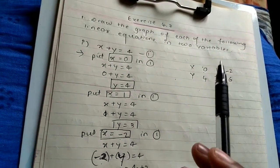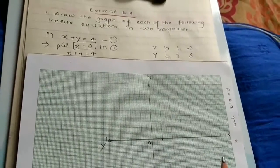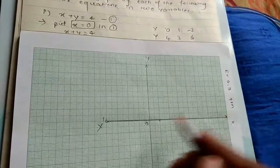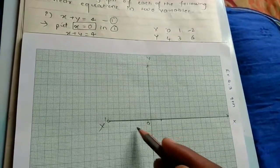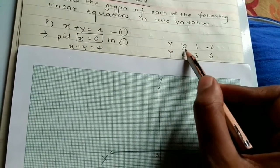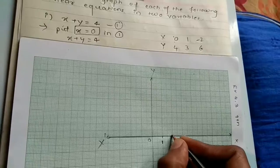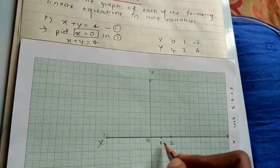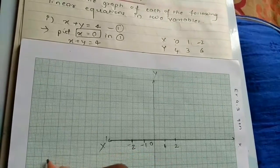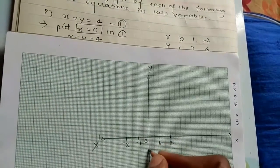That is what drawing a graph of a linear equation in two variables means. Now we will draw the graph. Here you can see the origin, with positive X axis, negative X axis, positive Y axis, and negative Y axis. Depending on your X and Y values you have to choose the scale. The positive highest X value is 1, and on the negative side it is minus 2. On Y, all values are positive and the highest is 6.